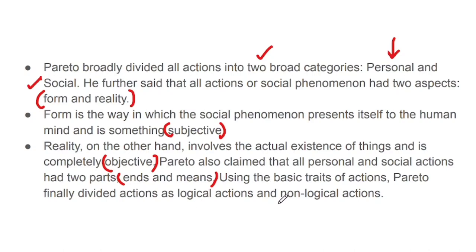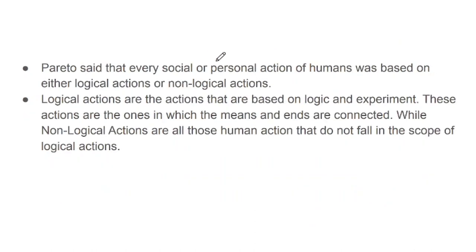Using the basic traits of action, Pareto finally divided actions into logical actions and non-logical actions. Finally, looking at all the characteristics of actions, Pareto gave us two categories: logical action and non-logical action. Pareto said that every social or personal action of a human was based on either logical action or non-logical action.